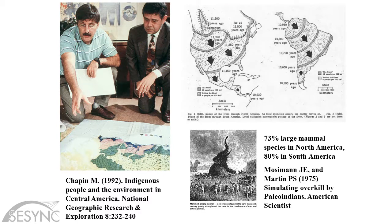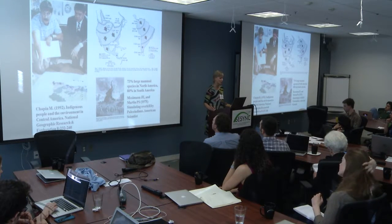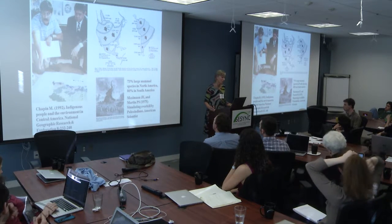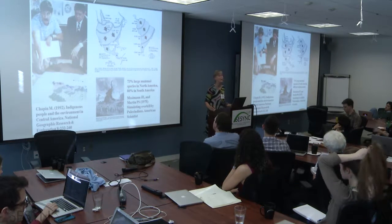We've been complicit in other ways. A very famous study done in 1975 by Mosemann and Martin argued that from their model, indigenous people could have been responsible for the blitzkrieg loss of large mammals across North and South America. They modeled the arrival of indigenous communities—then thought to be around 12,000 years ago—and with reasonable assumptions about demographic parameters of human and prey populations, showed that humans could have eaten their way from North America to the southern tip of South America in a thousand years, pointing the finger at humans for the loss of 73% of large mammals in North America and 80% in South America.